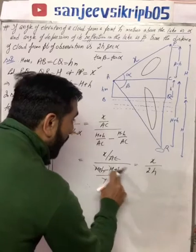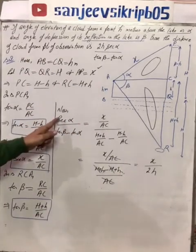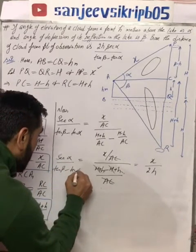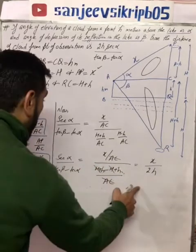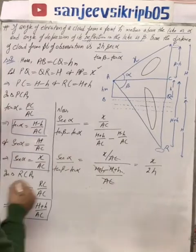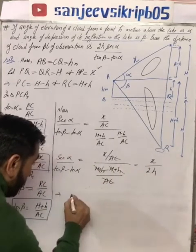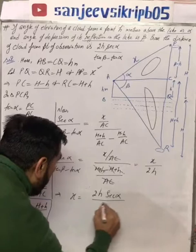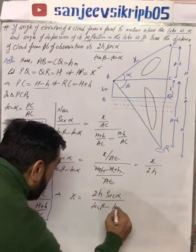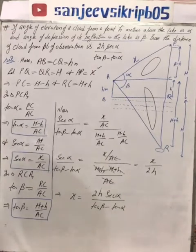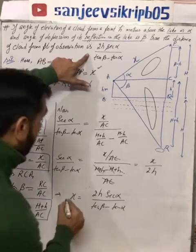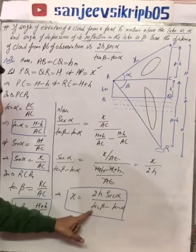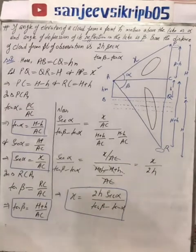So the value of sec alpha over (tan beta minus tan alpha) equals x over 2h. If I cross-multiply, 2h comes over to multiply, leaving x alone. Therefore x equals 2h times sec alpha over (tan beta minus tan alpha). Students, if you look carefully, this is exactly what we had to prove — that the distance of the cloud from the point of observation is 2h·sec(α) / (tan β − tan α).